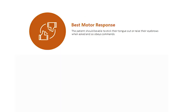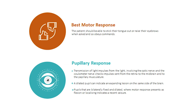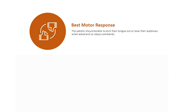Best Motor Response — the patient should be able to stick their tongue out or raise their eyebrows when asked, and so obeys commands. Pupillary Response — transmission of light impulses involves the optic nerve and the oculomotor nerve, checking impulses sent from the retina to the midbrain and to the pupillary musculature.